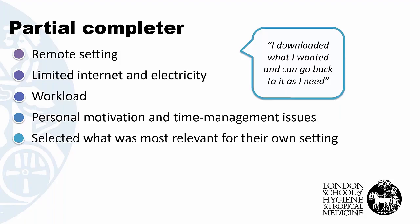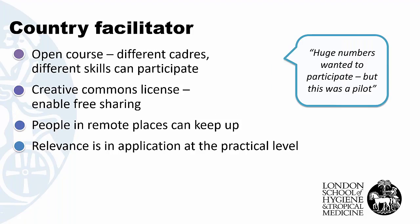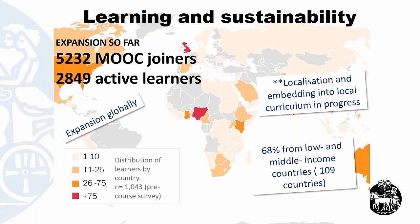The partial completers had a very similar profile but were very strategic learners — they only downloaded what they wanted and could go back to use it as required. Their challenge was their clinical workload, and personal motivation and time management issues were raised as major concerns. Our course facilitators in each country felt this was a great way to move forward and to involve people in remote places. The relevance was that it was applicable at the practical level, and huge numbers wanted to participate, but we had only done a pilot. So we went on to develop this course as a MOOC on the FutureLearn platform, and eventually had over 5,000 people join, many of them active learners from low and middle income countries.